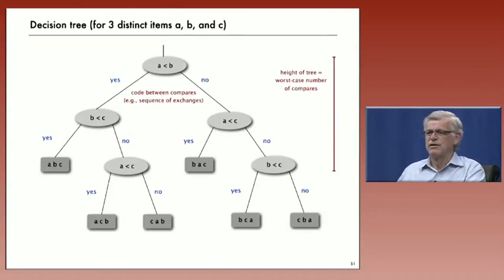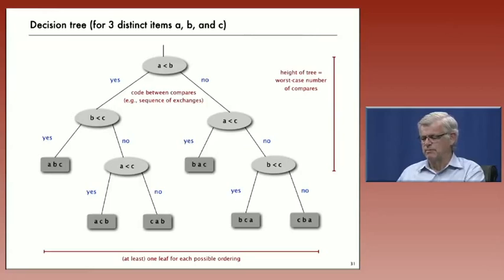Out of all the orderings, the one that's furthest down in the tree, that's the worst case. And so the algorithm, no matter what the input is, the tree tells us a bound on the number of compares taken by the algorithm.